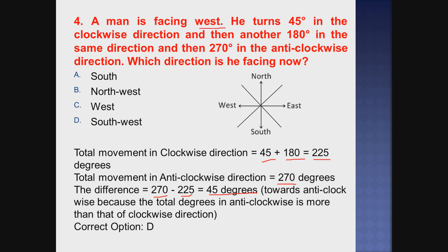Looking at the diagram: the man is facing west. Starting from west, turning 45 degrees in the anticlockwise direction - west and south, that is southwest. So the answer is southwest. The correct option is D.